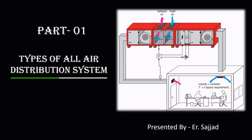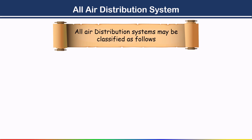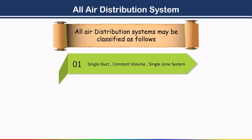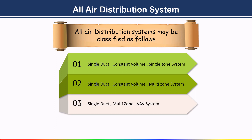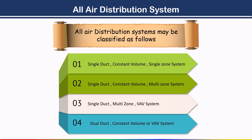Welcome back to this lecture on the types of all-air distribution systems, Part 1. All-air distribution systems may be classified as follows: first, single duct constant volume single zone system; second, single duct constant volume multi-zone system; third, single duct multi-zone VAV (variable air volume) system; and finally, dual duct constant volume or VAV system. We will now discuss each one by one.